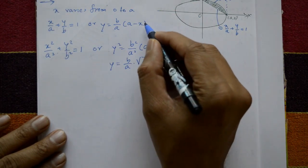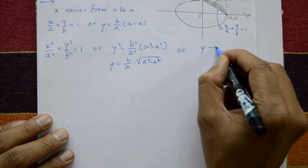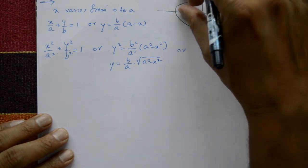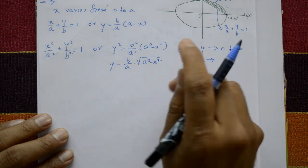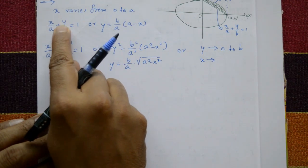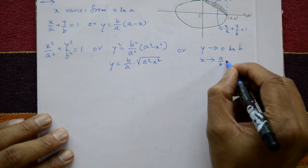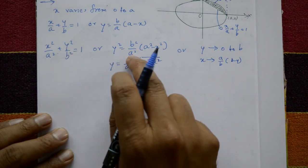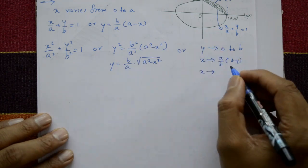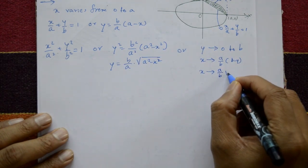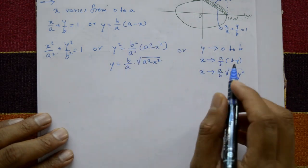Alternatively, suppose x = 0 to a and we interchange the order. Let y vary from 0 to b, and x varies from the straight line to the ellipse. From the straight line, x = a/b · (b − y), and from the ellipse, x = a/b · √(b² − y²). Taking any of these limits gives the same result.